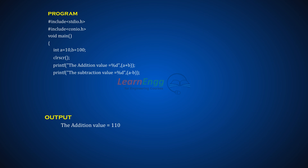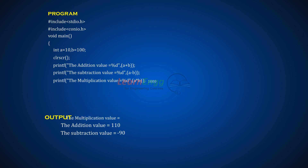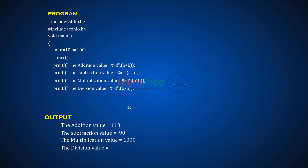The subtraction operation A minus B, that is 10 minus 100, displays the value minus 90. The multiplication operation A multiply B, that is 10 into 100, gives 1000 and printf displays the multiplication value as 1000. The division operation B divided by A, that is 100 divided by 10, gives 10 and printf displays the division value as 10. Similarly, the modulo operation returns the remainder value, which is 0, and printf displays the remainder value as 0. The getch function is used to wait for the user to exit from the program.